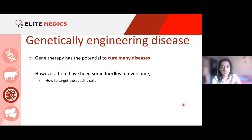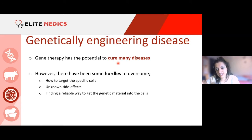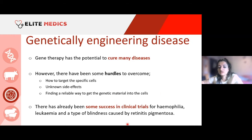Gene therapy has a high potential to cure many diseases and is a very hot topic, but there are hurdles to overcome: how do you target specific cells if they are widely dispersed? We don't know the side effects of genetic engineering yet, and we need a reliable way to get genetic material into cells. There has been some success in clinical trials for haemophilia, leukaemia, and types of blindness such as retinitis pigmentosa.